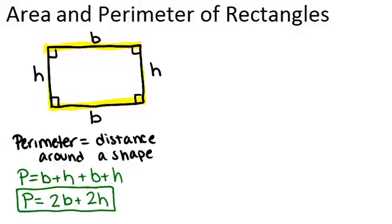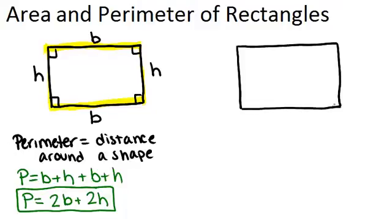Next, let's talk about area. Now, perimeter was a one-dimensional measurement, meaning that your units for perimeter will always be just units, inches, centimeters, something like that. Area is a two-dimensional measurement. One way to think about it is, area is the amount of space inside a two-dimensional object.